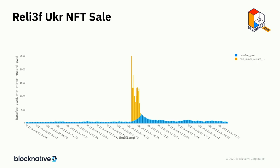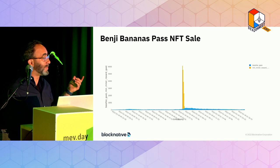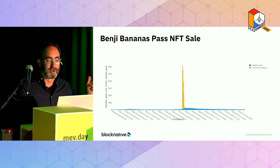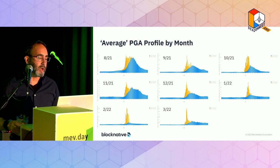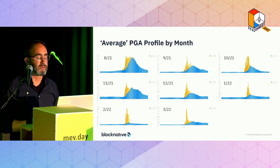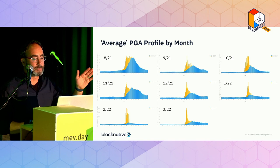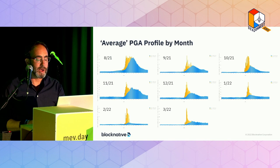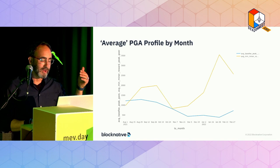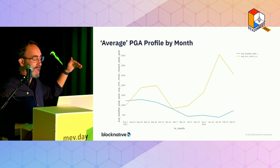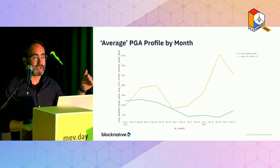The Benji Bananas NFT sale had a spike of 6,000 gwei minimum block inclusion — massive increases. We did some gross analysis to average out the PGA profile by month. Looking at August 2021, just when EIP-1559 launched, we see the expected tabletop effect. But as we click forward through the months, the overshoot effect becomes more pronounced and more common. Looking at monthly data — the average peak of the base fee versus the priority fee — the average peak of the base fee is declining over time while the average peak of the priority fee is increasing. The psychological impact seems to be growing.